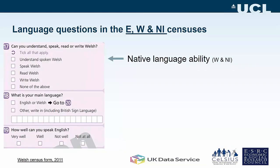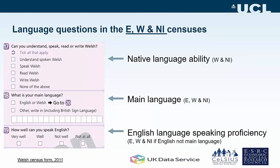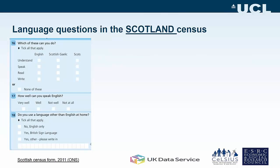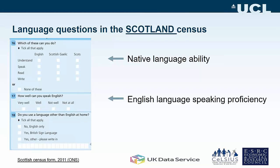Here we see a question from the census form in England and Wales about people's capability with Welsh: can you understand spoken Welsh, speak Welsh, read Welsh, write Welsh, or none of the above? The census form was also available in Welsh for Welsh speakers. In Scotland, there's a similarly structured question asking whether you can understand, speak, read, or write English, Scottish Gaelic, or Scots. There are also questions about how well people can speak English and whether you use a main language other than English at home.